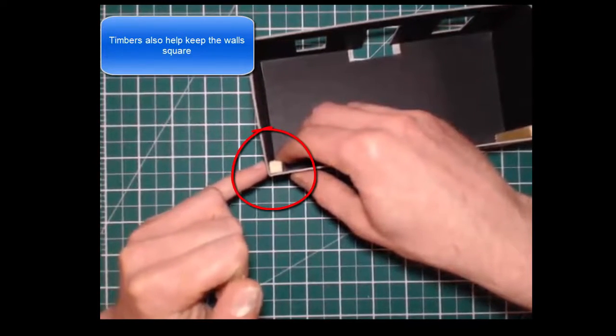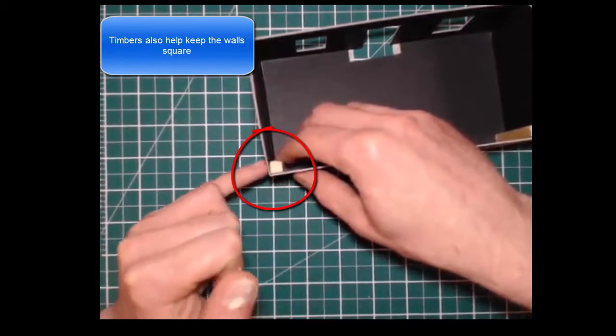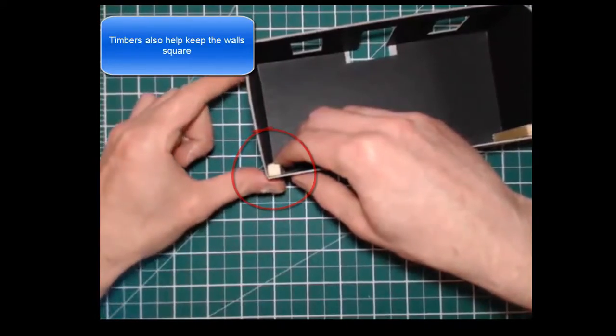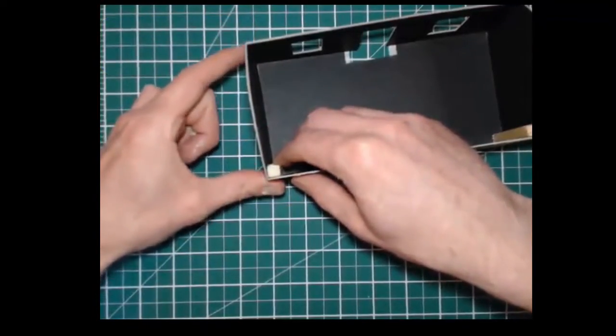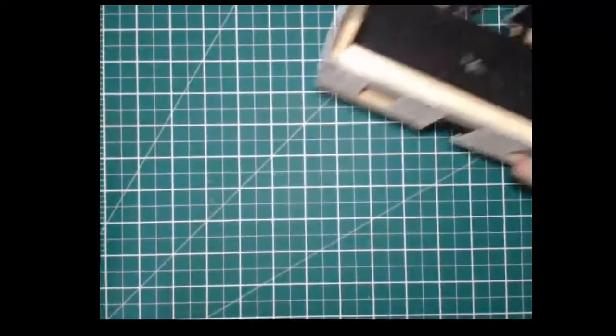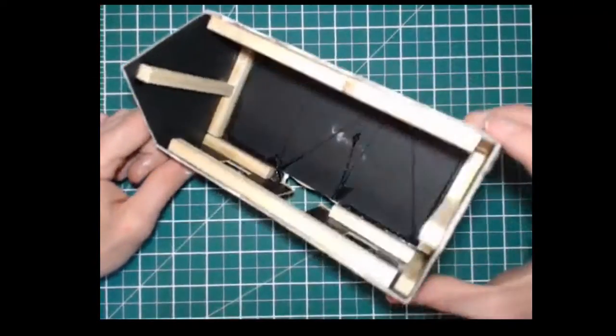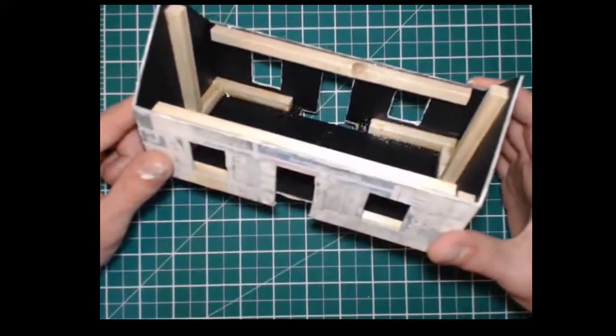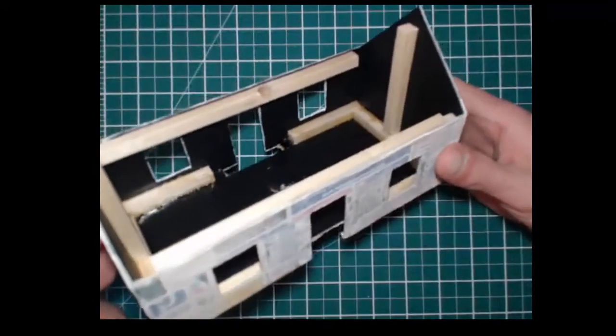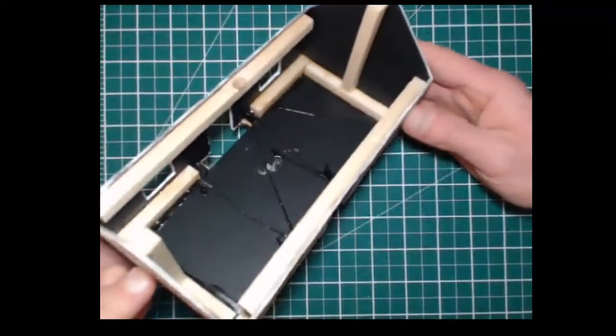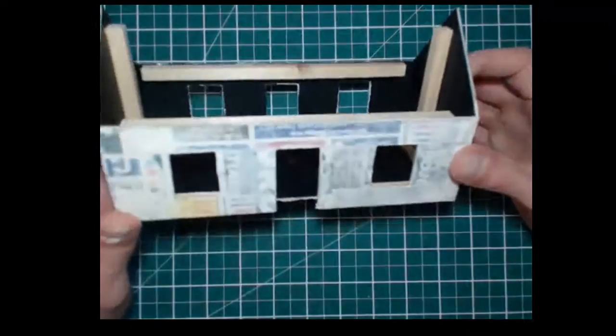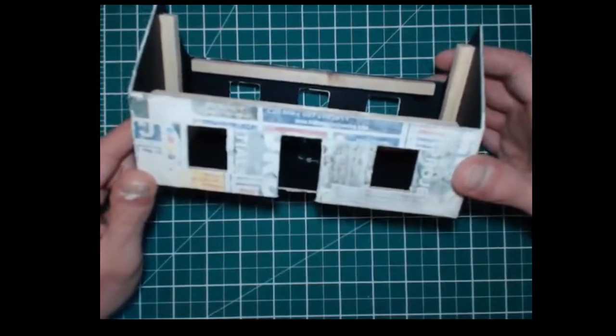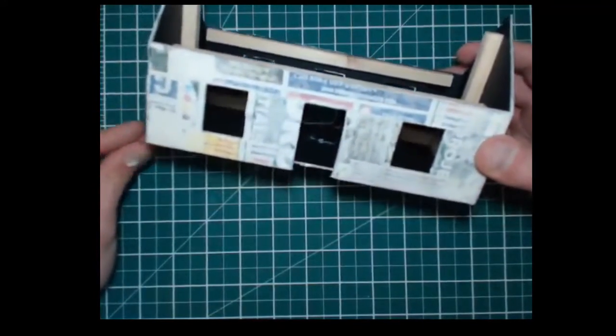What this will also do is it'll keep your corners, all four of your corners at 90 degrees to each other, so they'll be perfectly square. If you carry on that process and follow the same pattern roughly as what I have done here, that should be adequate to hold the sides of the walls together. I'm just going to show you quickly how I actually applied the paper mache finish.